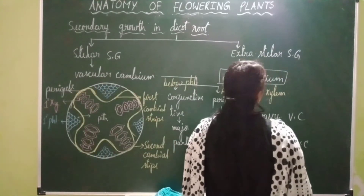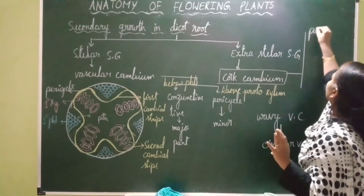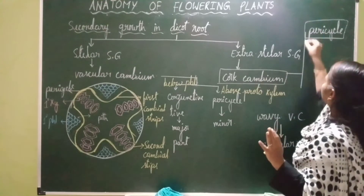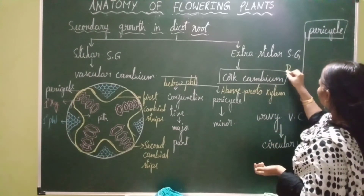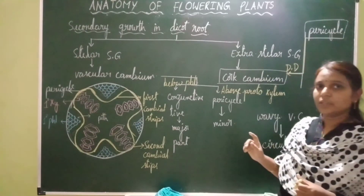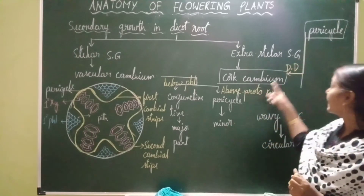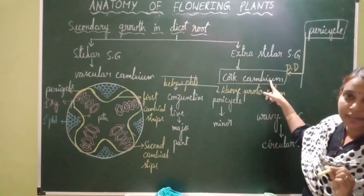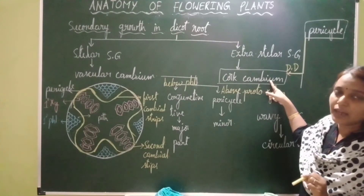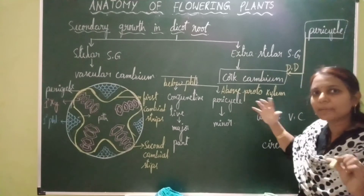The cork cambium is formed by the de-differentiation of the cells of pericycle. An important point: pericycle is involved in the formation of some part of the vascular cambium but the complete cork cambium. In roots, pericycle is also involved in the formation of lateral roots. So the functions of pericycle are: to form lateral roots, to form some part of vascular cambium, and to form the complete cork cambium.